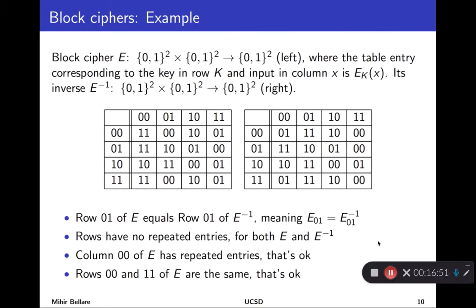Given the permutation property, we can write the inverse: it's a two-argument function where rows are indexed by keys, columns by outputs, and the entry is the input corresponding to that output. You read the corresponding row of the prior table backwards. For example, in the forward table, key 00 takes input 00 to 11. So in the inverse table, under key 00, input 11 maps back to 00. That's how you fill in the inverse table.